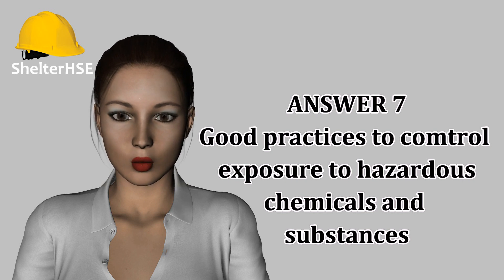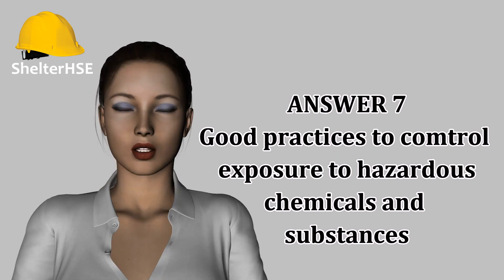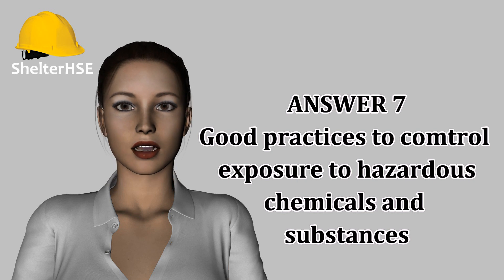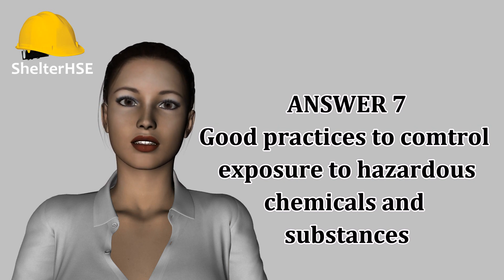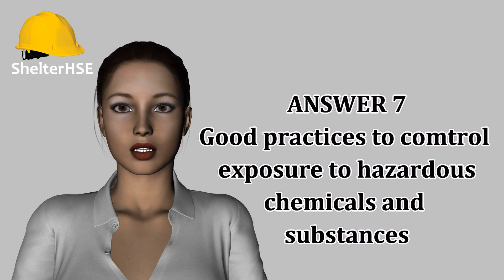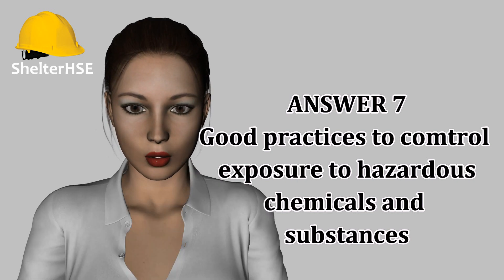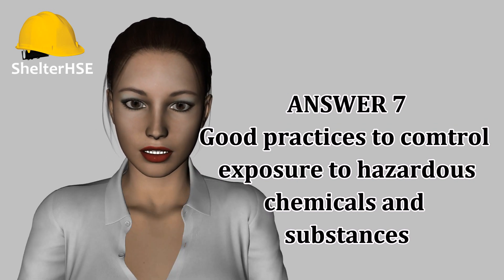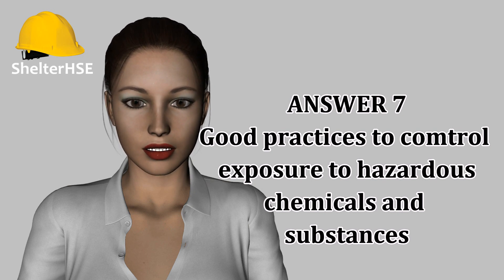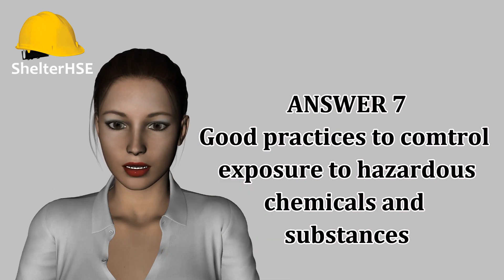What good practice principles should an organisation adopt when there are chemicals in the workplace? Minimization of emission, release, and spread of hazardous substances through design and operation of processes is key. Wherever possible, processes should be modified to remove the hazardous substance altogether, substitute it for a less hazardous alternative, or design a work process that controls the substance at source — for example, by totally enclosing the substance or providing engineering controls such as extraction.